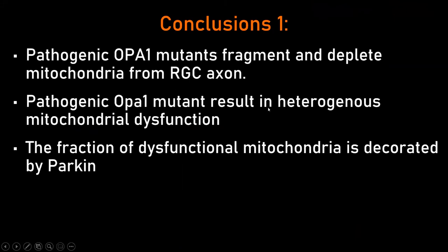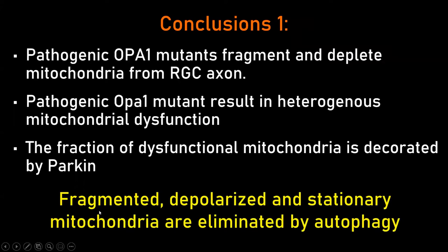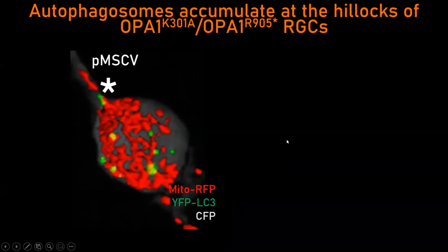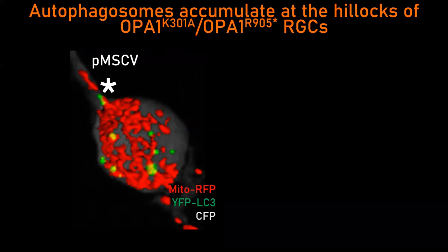These mitochondria harboring pathogenic OPA1 mutants are heterogeneously dysfunctional and are therefore targeted for mitophagy. All these phenotypes — that the aggregated mitochondria are polarized and stationary, similar to what Rossovania has shown — indicate perhaps that these mitochondria are being targeted for autophagic degradation. We decided to verify this by simultaneously labeling mitochondria in red using a red fluorescent protein targeted to the mitochondria, and autophagosomes in green using a yellow fluorescent protein-tagged autophagosomal marker.